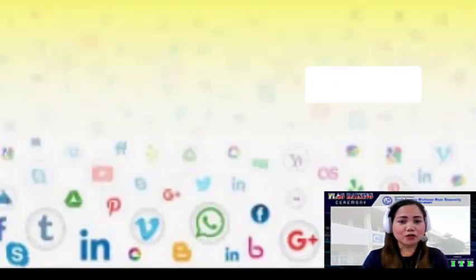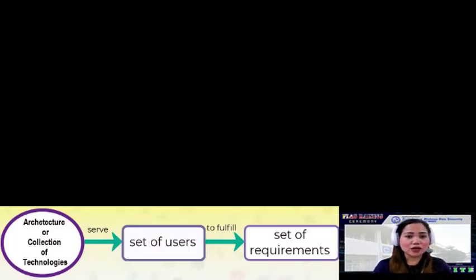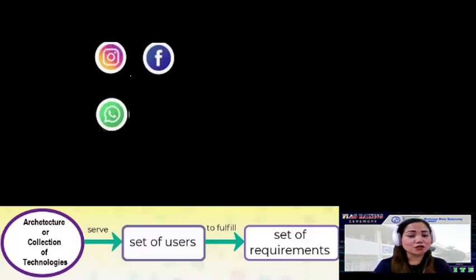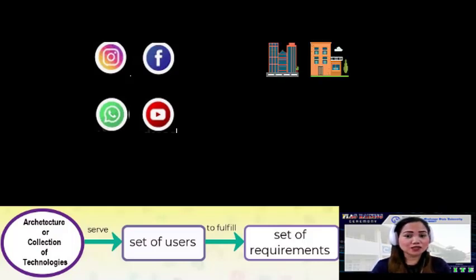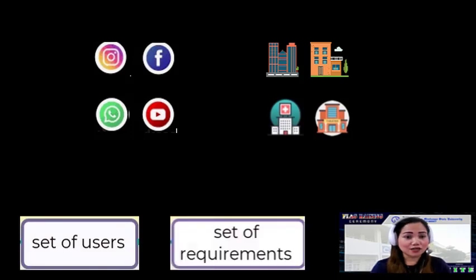For example, we have large-scale systems. In applications, we have Instagram, Facebook, WhatsApp, and YouTube. And for real-world systems, we have buildings, hotels, hospitals, and theaters. So those are examples of large-scale systems which suit the needs of a certain set of users and a certain set of requirements.